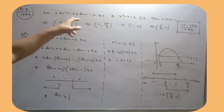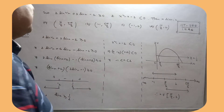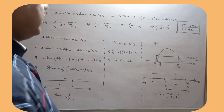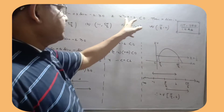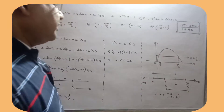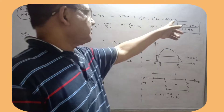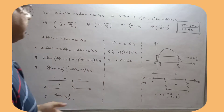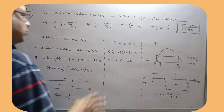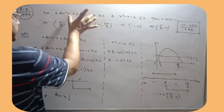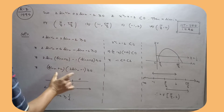Let 2sin²x + 3sinx − 2 ≥ 0, and x(x+2)(x−2) < 0. Then x lives in — radian में क्या होगा, तुम्हें बताना है।